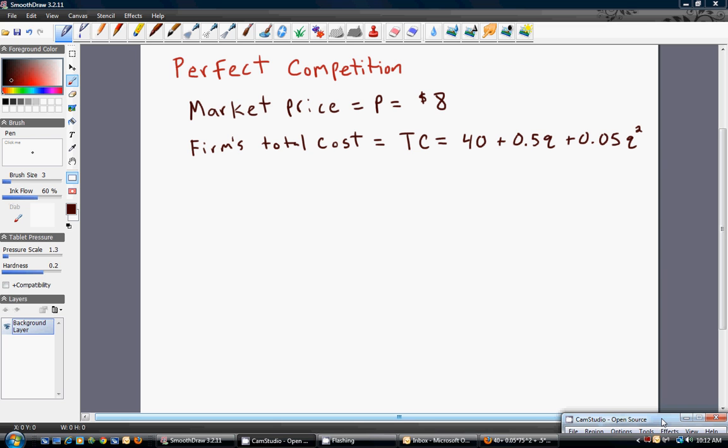In this market, I'm assuming that the market price, the equilibrium price, is $8, and we have a firm with a total cost structure given by 40 plus 0.5q plus 0.05q squared. This lowercase q represents the output of the firm. So in this problem, let's find the ideal amount of output that this firm would produce, that is the firm's profit maximizing output level.